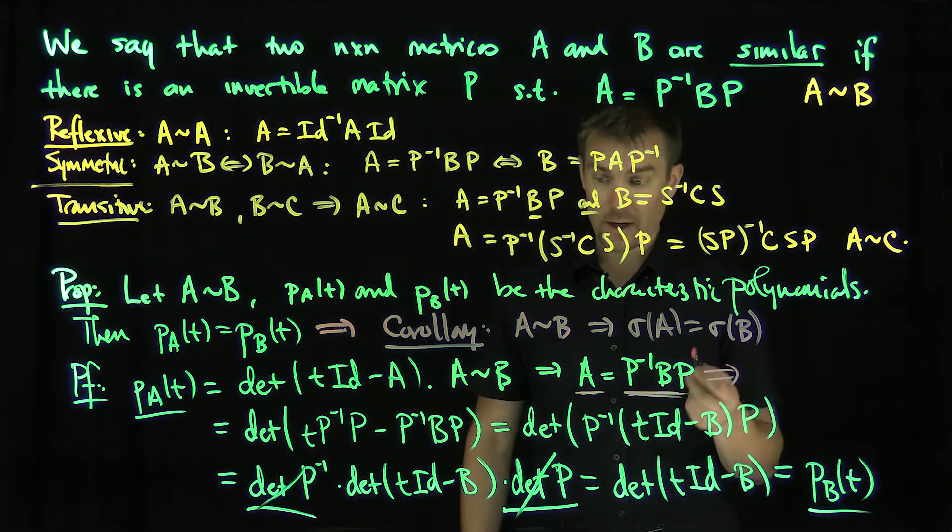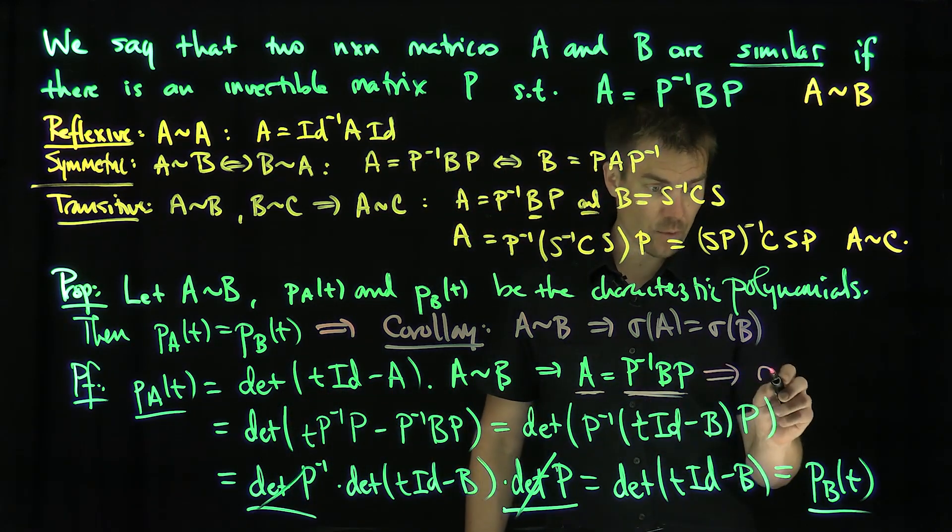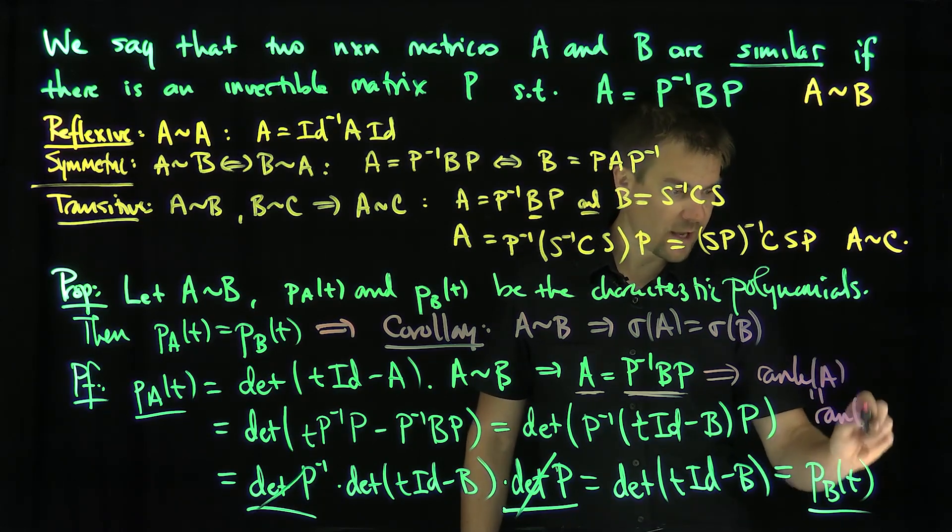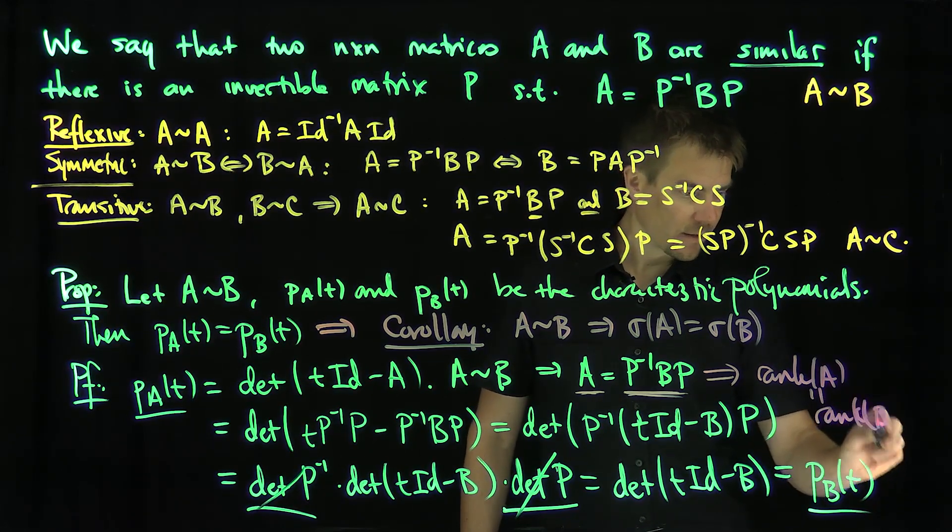And then if I put the P on the other side, that would say the rank of B is greater than or equal to the rank of A. So this relationship tells me that the rank of A equals the rank of B